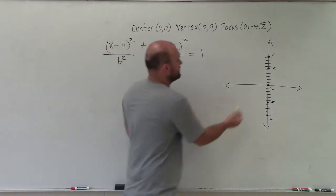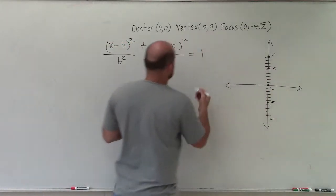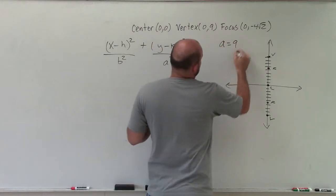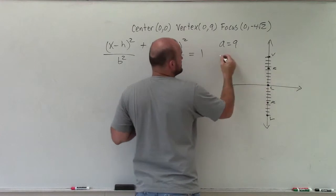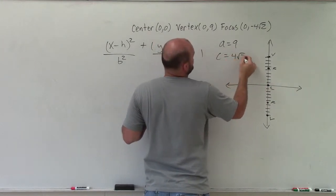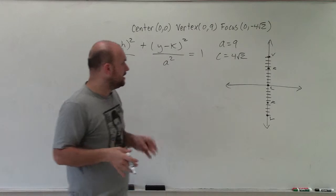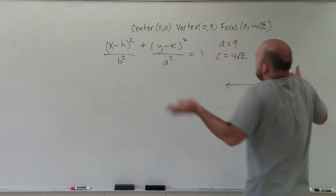So we know that from center to vertex is going to be 9. So we can just say a equals 9. We know c, which is the distance from the center to the foci, is equal to 4√2. We're just looking at absolute distance.